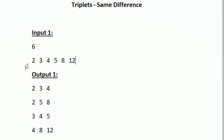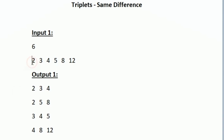Our task is to find triplets. We have to generate all possible triplets and if a triplet is valid then we have to print it. A triplet is valid if the difference between the first two integers and the last two integers are the same. For example, 2 3 4 is the first valid triplet — the difference between 3 and 2 is 1, and the difference between 4 and 3 is also 1, so this triplet satisfies the condition.